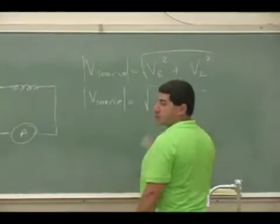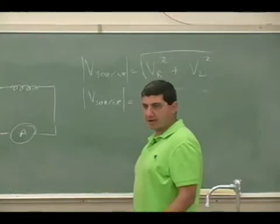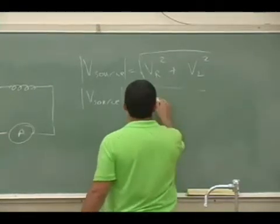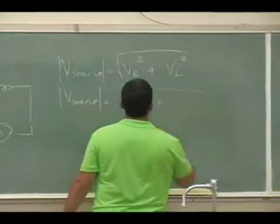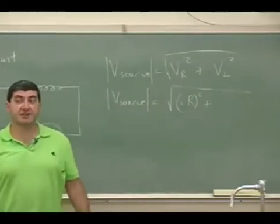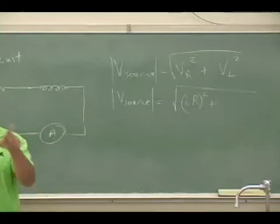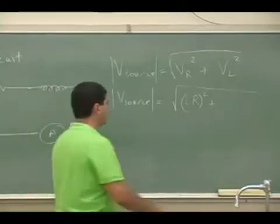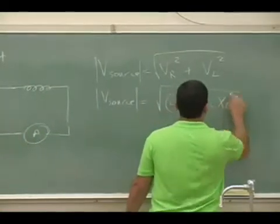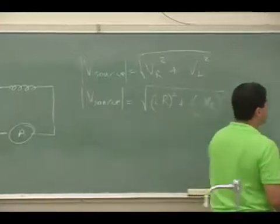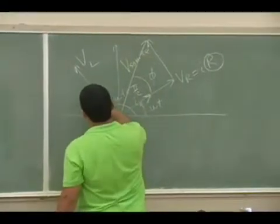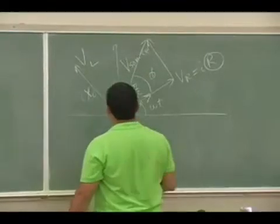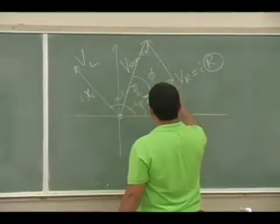And then the voltage of the resistor is going to be IR. And then voltage of the inductor is going to be IXL. In other words, in this diagram, the amplitude of the vector is IXL. And then the amplitude of this vector is IR.